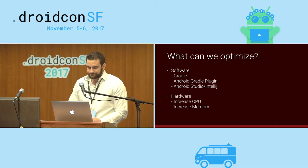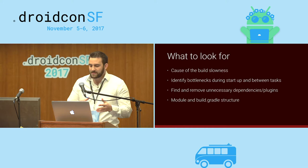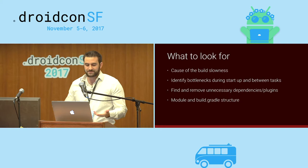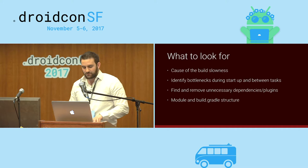We want to look for all bottlenecks: deterring startup tasks, in-between tasks, how builds start, how builds finish, anything that causes slowness. We want to find and remove unnecessary dependencies and plugins we don't need, check how our module builds look and our build Gradle structures, and optimize the Gradle DSLs to make them faster.